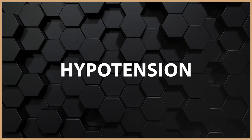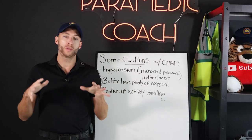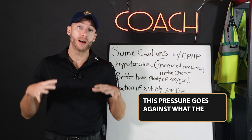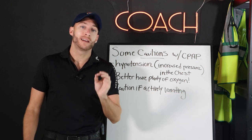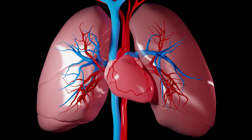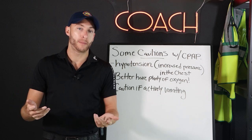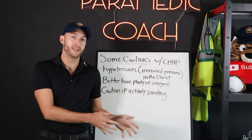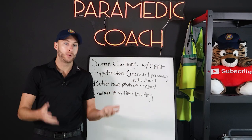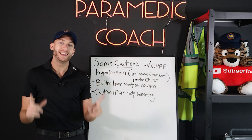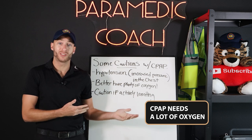Watch out for hypotension with CPAP. We're increasing pressure in the patient's chest, which goes against what the body is used to. At higher levels of CPAP, the amount of blood returning to the heart can decrease, causing hypotension. If someone is already hypotensive and you want to give high-level CPAP, you have to weigh that risk — it can become a contraindication. Follow your protocols. Also, CPAP uses a lot of oxygen, so make sure you have plenty before starting.